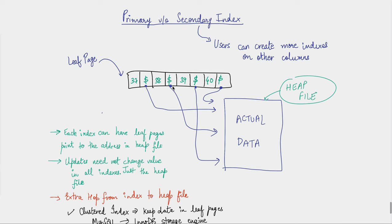Now let's talk about primary versus secondary indexes. So far we've discussed primary indexing where a key occurs only once. However, users can create secondary indexes on other columns to optimize queries. One way to do that is to create another B-tree for the secondary index. An important question arises: what about the leaf page? If both primary and secondary indexes store data inside their leaf nodes, that causes terrible data duplication, and any update to a record requires updating all indexes.